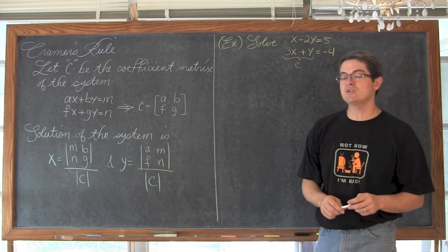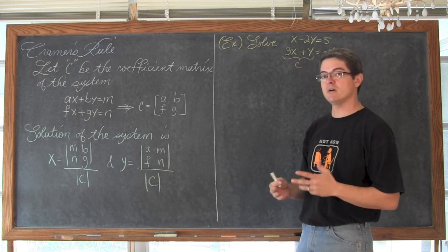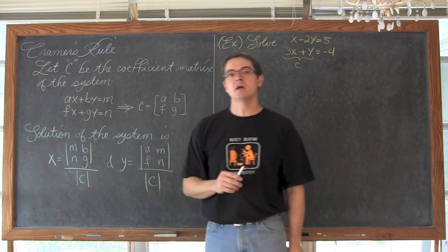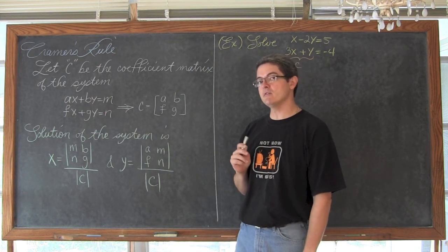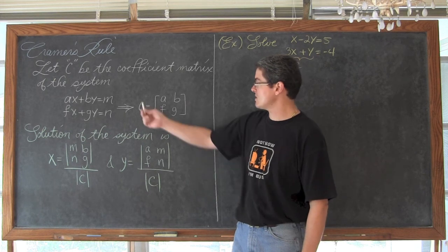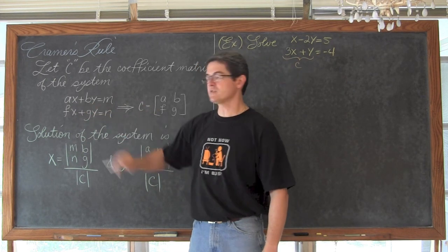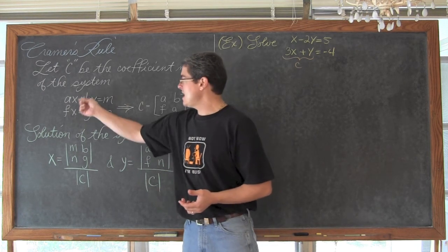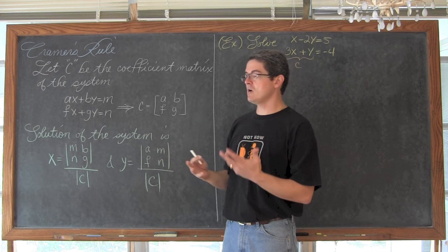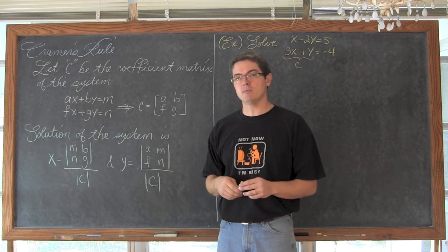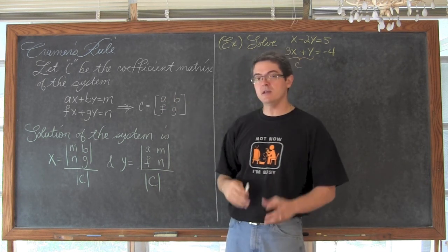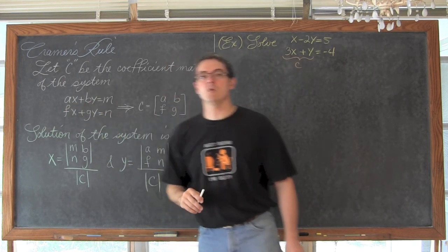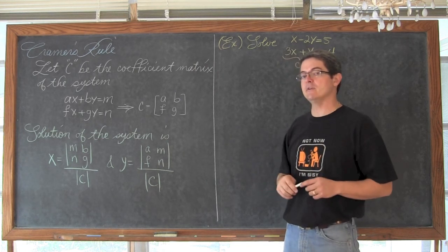Let's see the coefficient matrix of the system of equations. We have ax plus by equals m and fx plus gy is equal to n. The matrix C, the coefficient matrix, is going to be formed by identifying the variables x and y. All the other variables — a, b, f, g, m, n — are going to be constants in the problem. The matrix with a, b in the first row and f, g in the second row is your coefficients matrix: what comes in front of the x's and what comes in front of the y's.